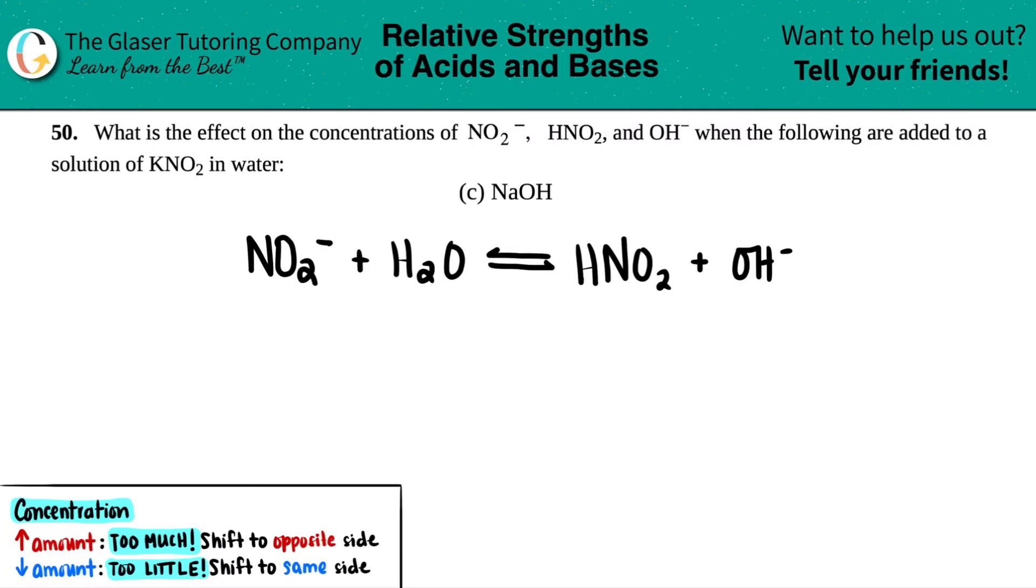Number 50, what is the effect on the concentrations of NO2 minus, HNO2, and OH minus when the following are added to a solution of KNO2 in water?